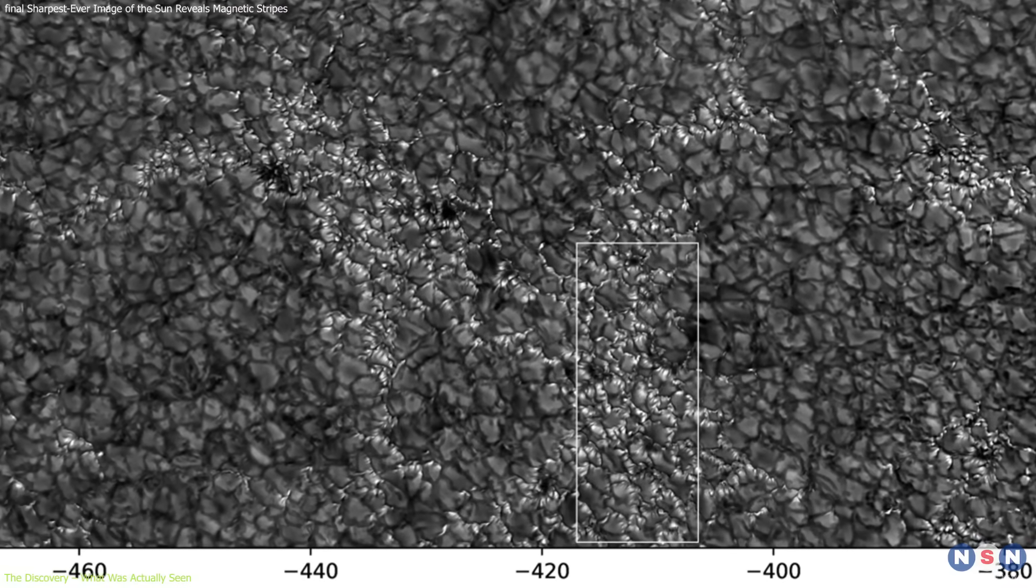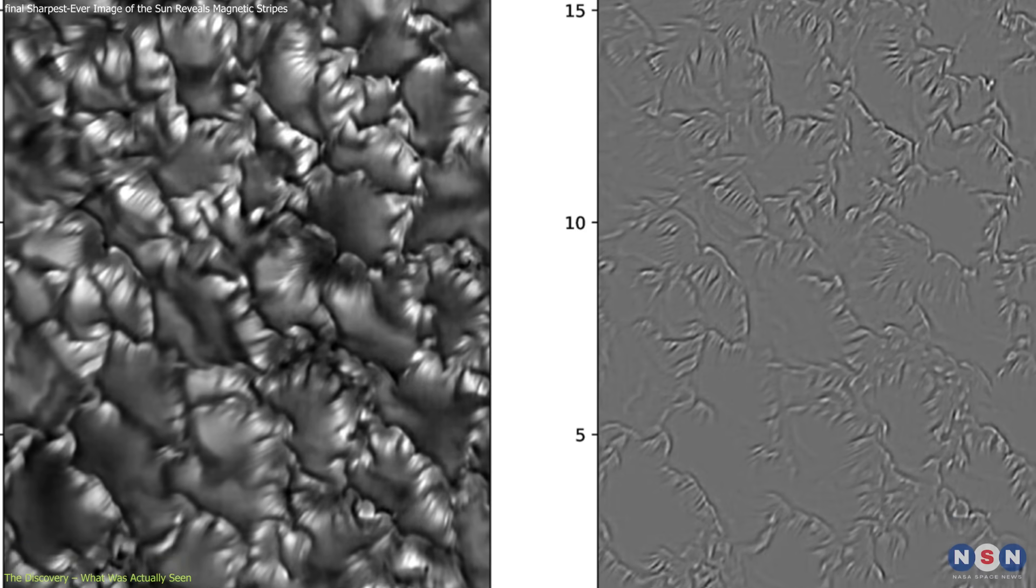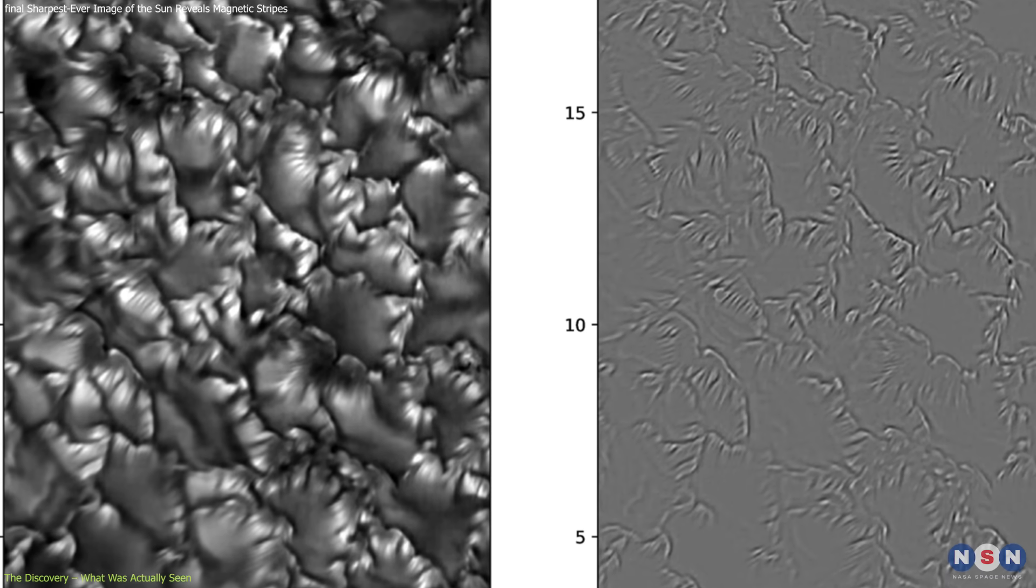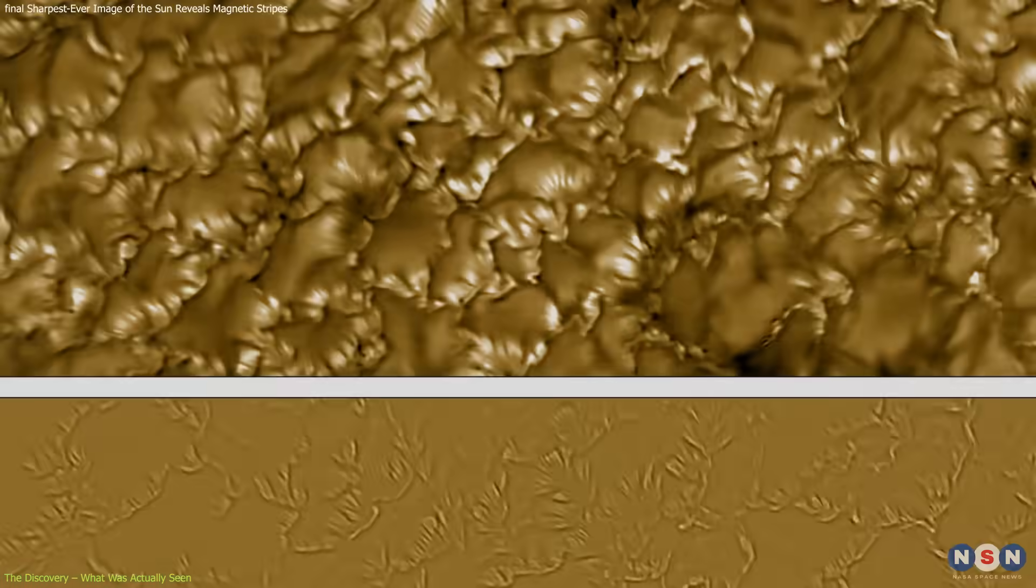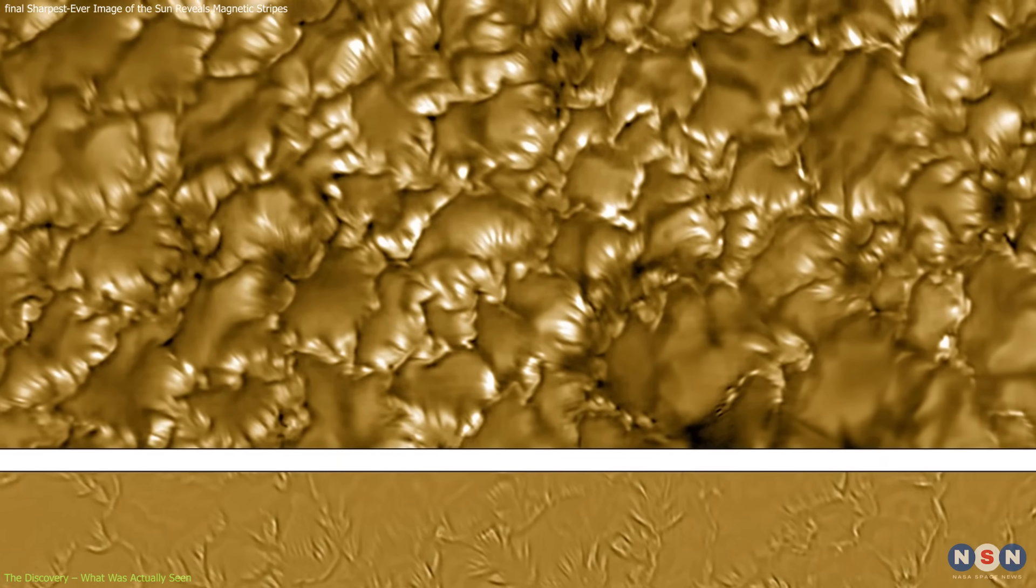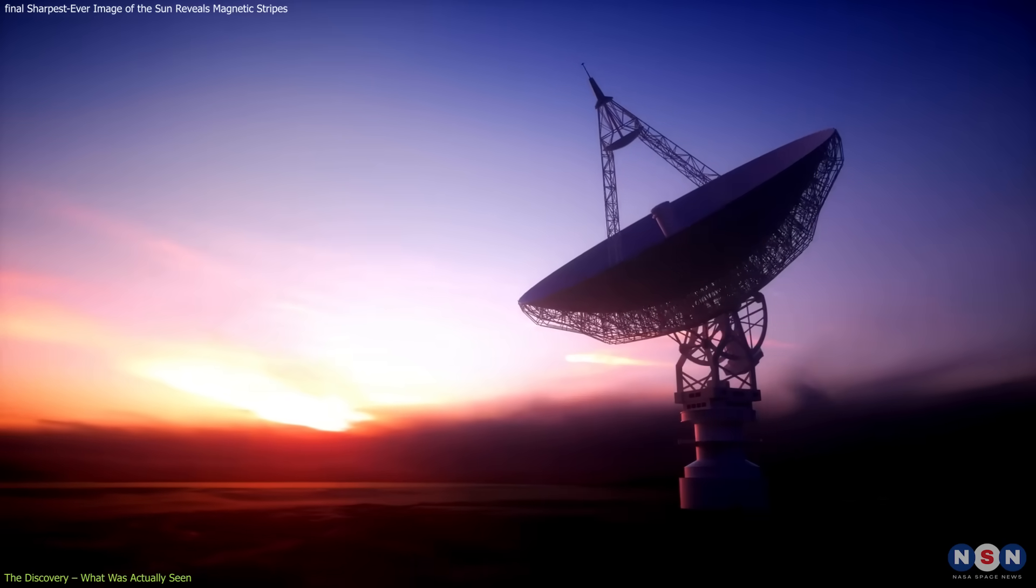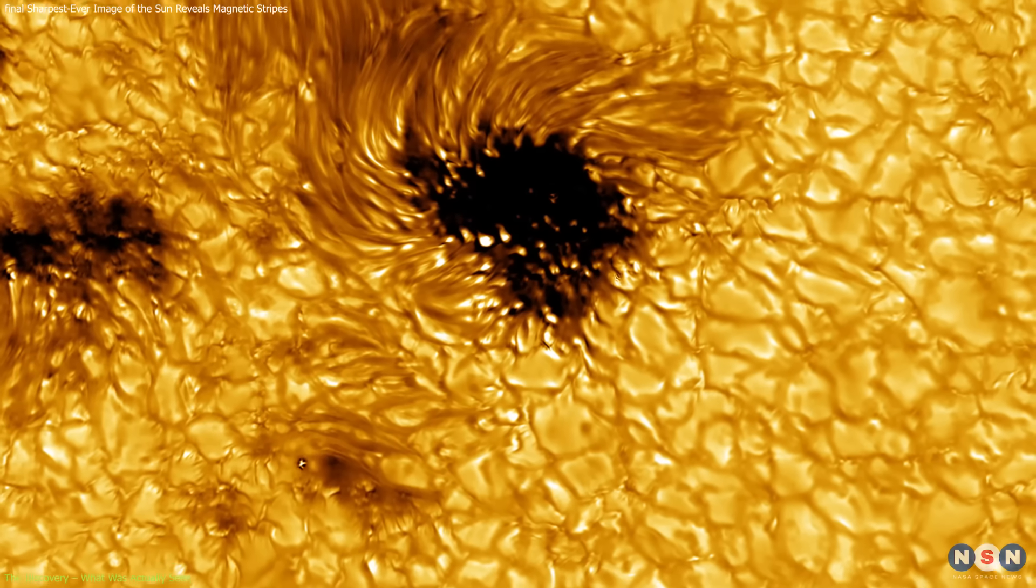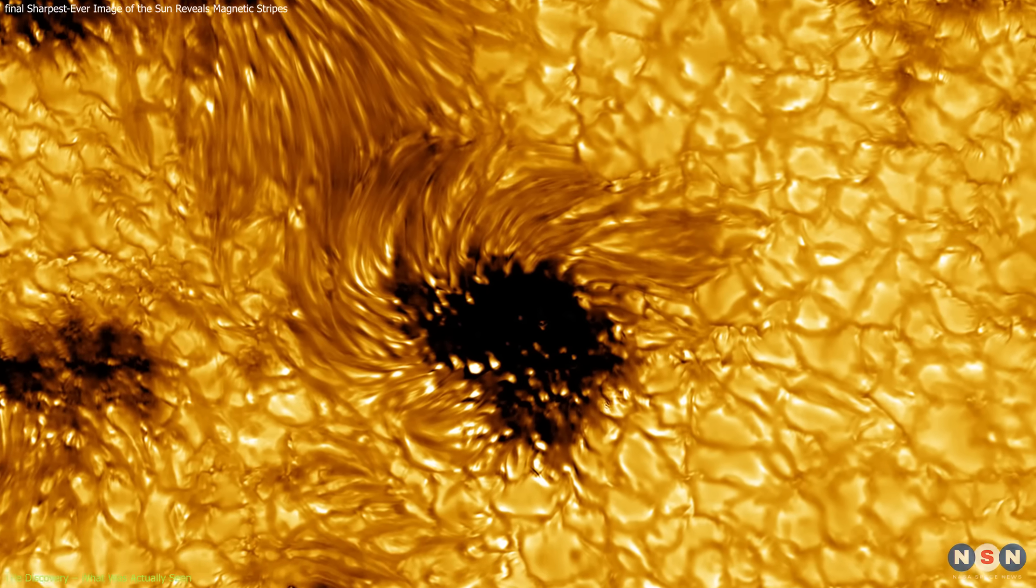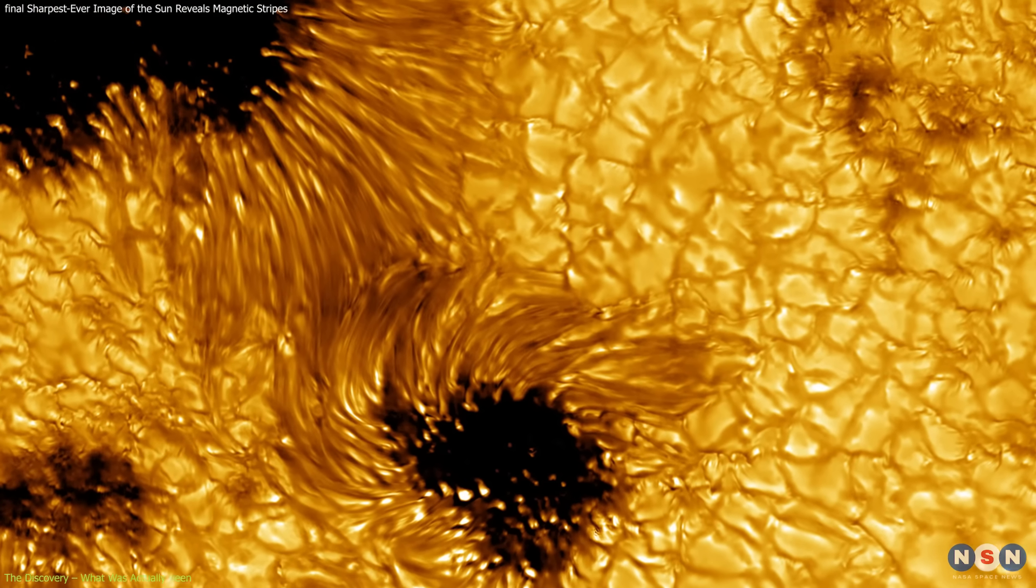The ability to detect them comes down to resolution. At 20 kilometers per pixel, this level of detail marks a breakthrough in how finely we can observe the photosphere from Earth. In previous telescopes, features smaller than 100 kilometers across were indistinguishable from background fluctuations.